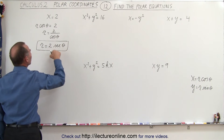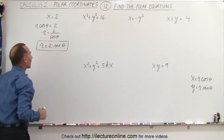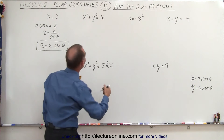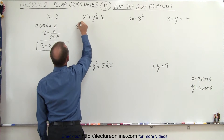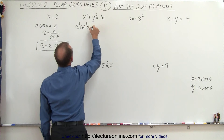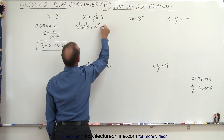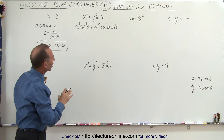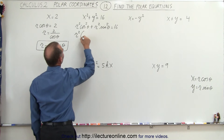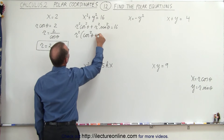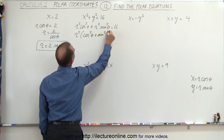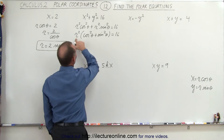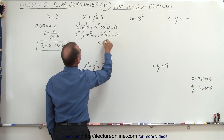That would be the same equation in polar coordinates as x equals 2. If we have x squared plus y squared equals 16, we can do the same thing. x squared becomes r squared times cosine squared of theta, plus r squared times sine squared of theta, equals 16. Factoring out r squared, we have r squared times the quantity cosine squared of theta plus sine squared of theta equals 16. Since cosine squared plus sine squared equals 1, r squared equals 16, so r equals 4.